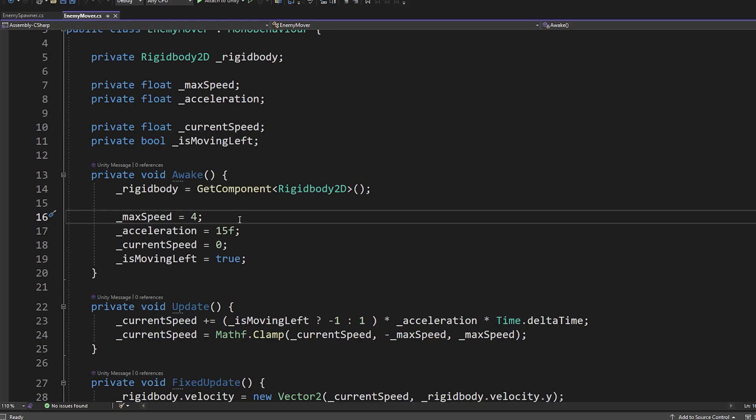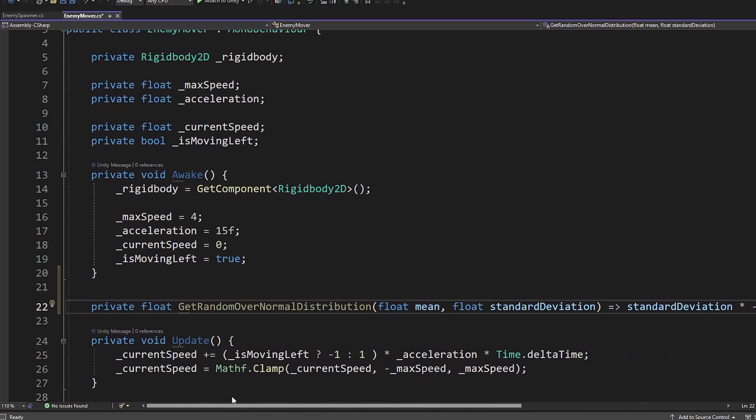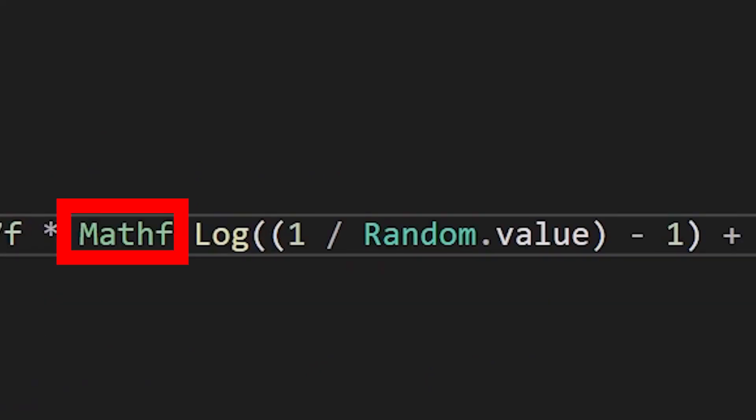Instead of having max speed be 4 for every enemy, let's change it to use a normal distribution. Like I said in the title of the video, we really only need one line of code, and that's this right here. That code will be in the description of the video, so you can just copy and paste it in.